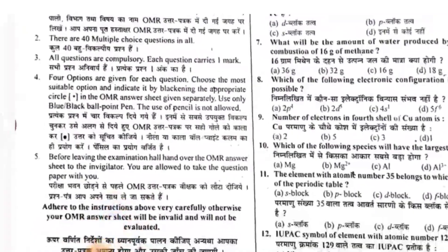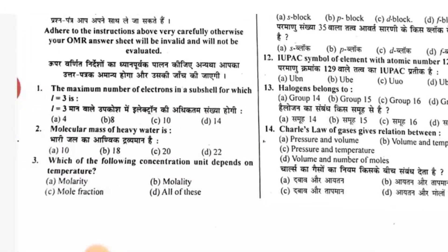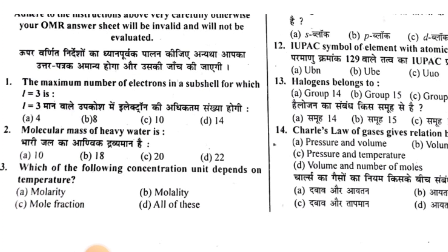Let's see the first most important MCQ question and practice the answers. The maximum number of electrons in a sub-shell for which L equals 3 — what will the maximum number of electrons be? When L equals 3, we know we have studied KLMN as the names of the orbits. So the maximum number of electrons in the sub-shell will be 14. Answer is A.